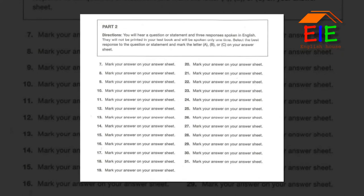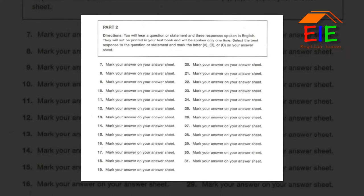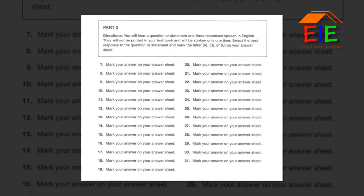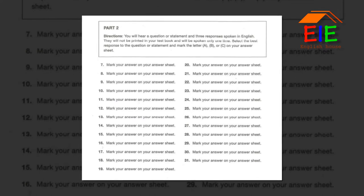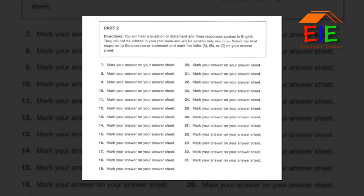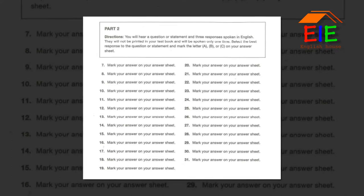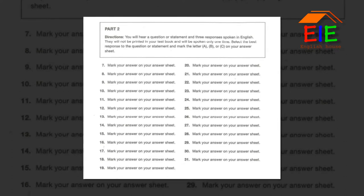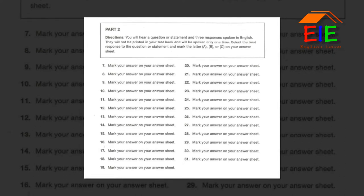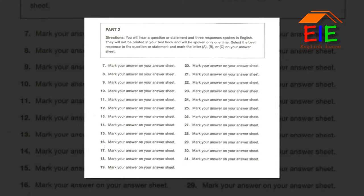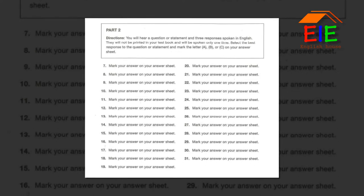Number 9: You ordered more parts for the motor, right? A. I promoted him. B. Thanks, it's a new model. C. Yes, last week. Number 10: When is the rent due? A. Please send it by Friday. B. I do have one. C. The new apartment complex.